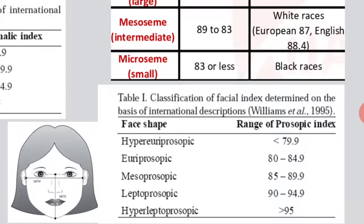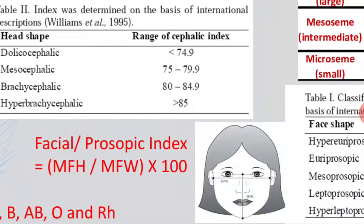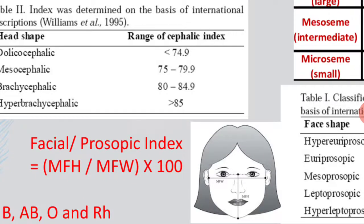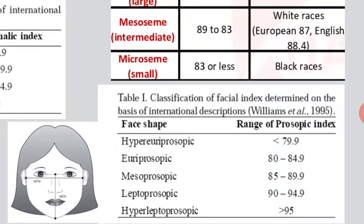Then there is the facial index, also called the prosopic index. The prosopic index is the measurement of mean facial height divided by mean facial width, multiplied by 100. Mean facial height is taken from between the two eyes above the nose to the chin. This is classified into five categories: hyperuryprosopic, uryprosopic, mesoprosopic, leptoprosopic, and hyperleptoprosopic.